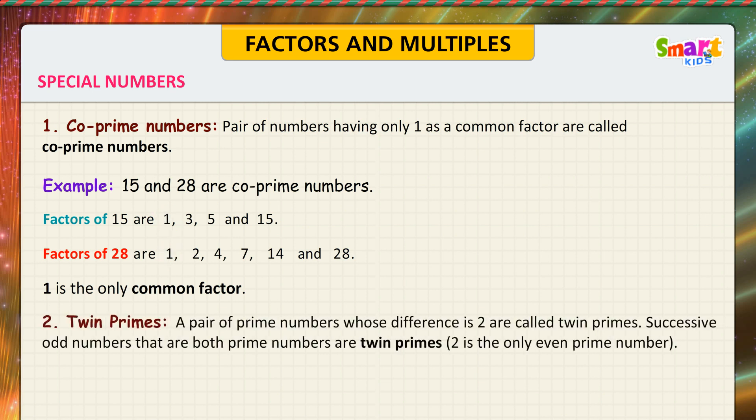Twin primes: A pair of prime numbers whose difference is 2 are called twin primes. Successive odd numbers that are both prime numbers are twin primes. 2 is the only even prime number. See the example. 3 and 5, 5 and 7, 11 and 13, 17 and 19, etc. are twin primes.